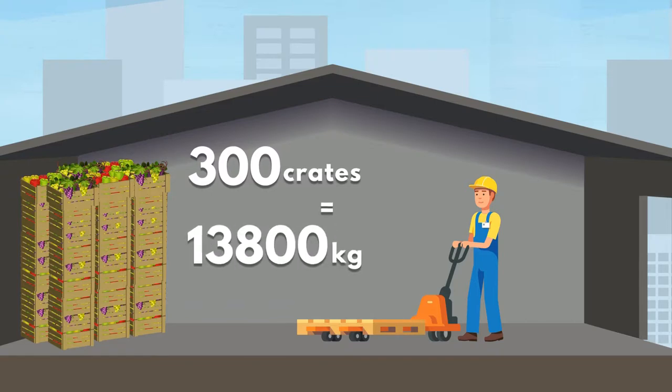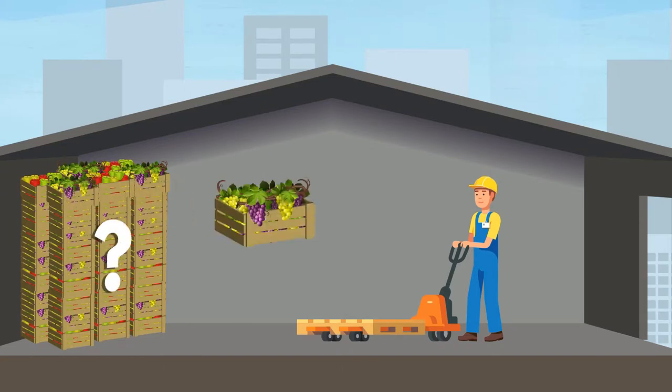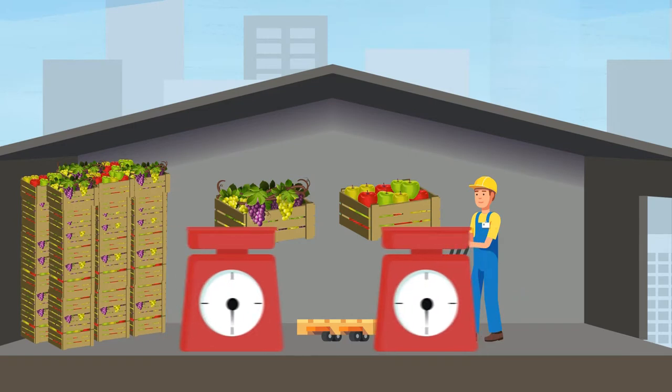Unfortunately, you can't access the data that shows how many of these are crates of grapes and how many are of apples. All you know is that a crate of grapes weighs 40 kg, and a crate of apples weighs 50 kg.